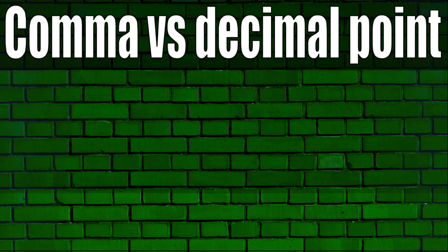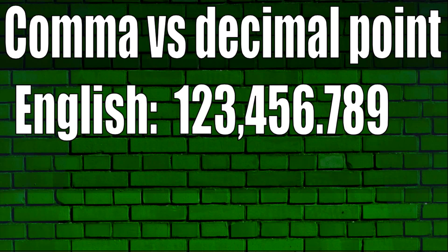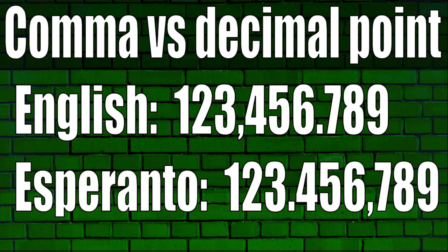One important thing to learn with Esperanto numbers is that the comma and the decimal point are switched. In English, we use a comma to separate the thousands place and a point for decimals. But in Esperanto, we use the decimal point to separate the thousands place, and we use the comma for decimals.